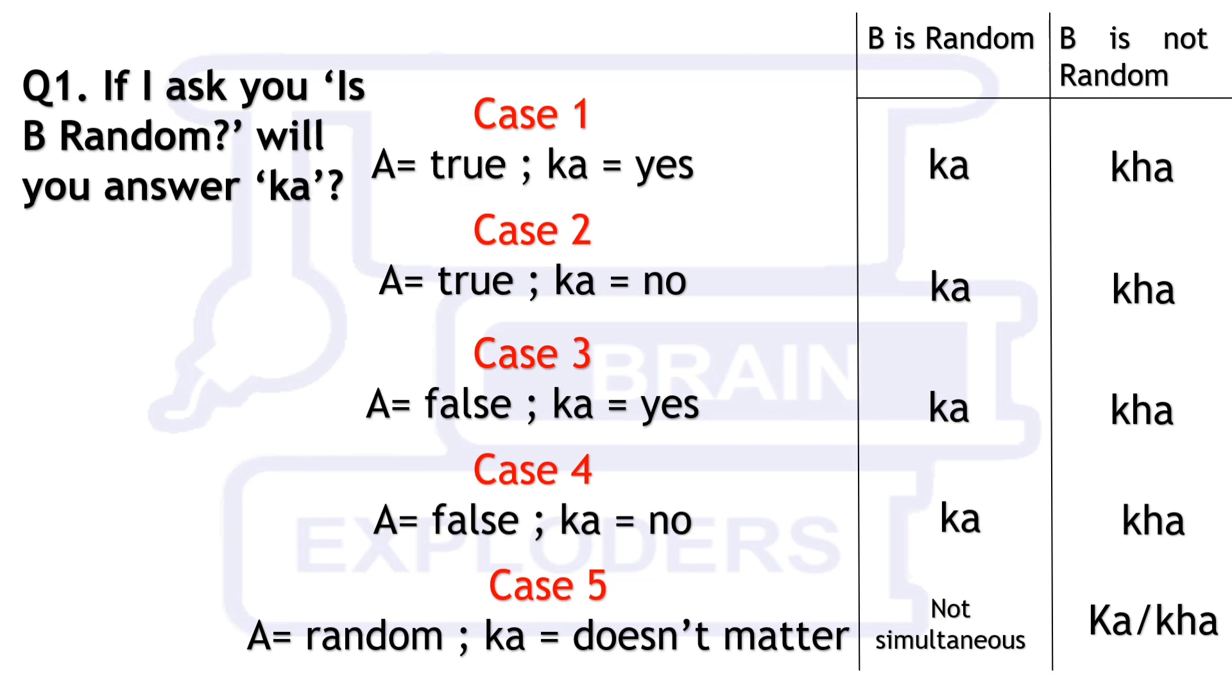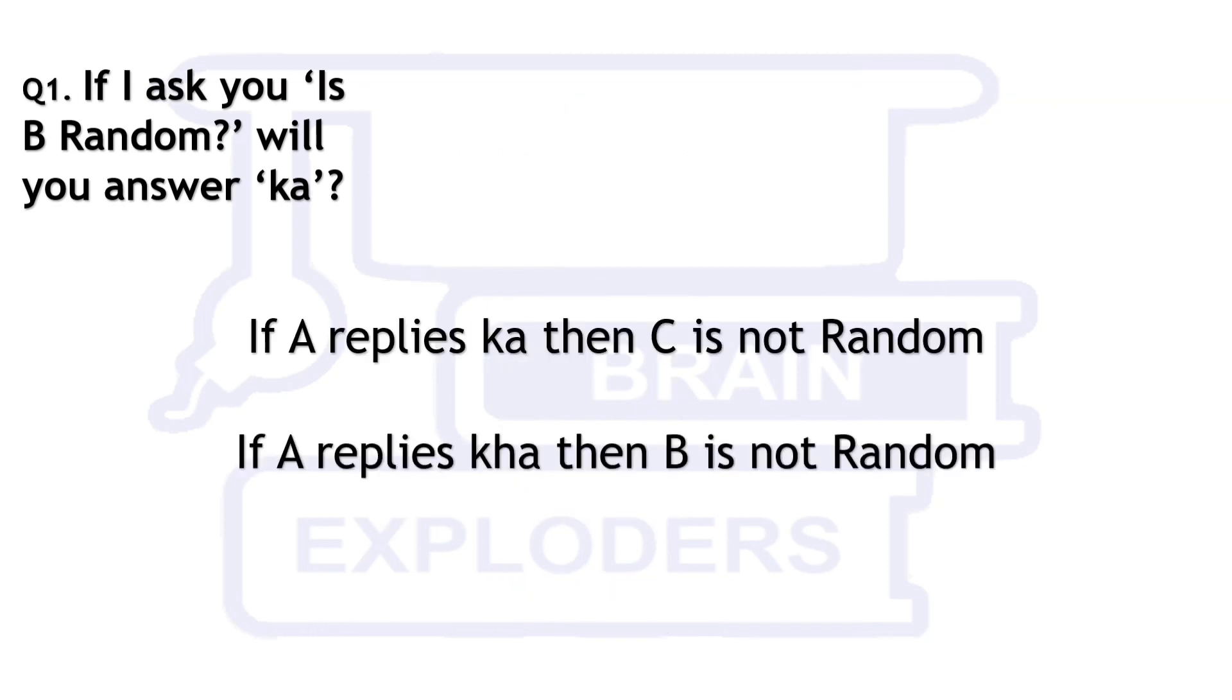This table gives us two conclusions that if A replies Ka then C is not random and if A replies Kha then B is not random.